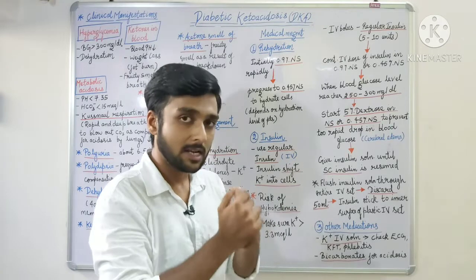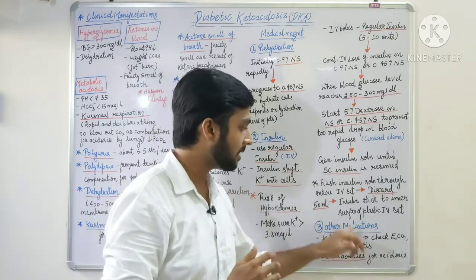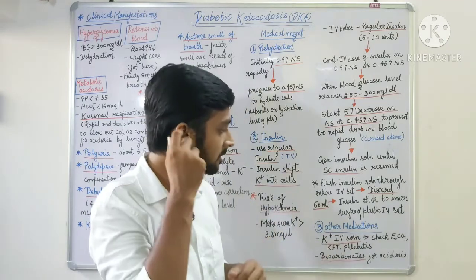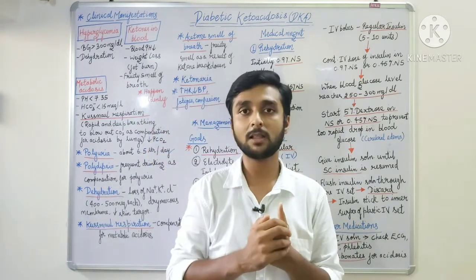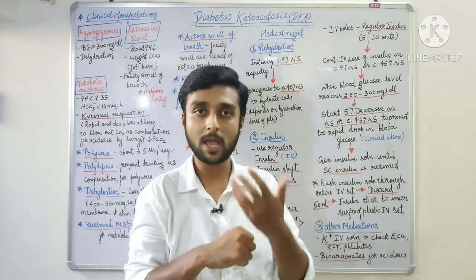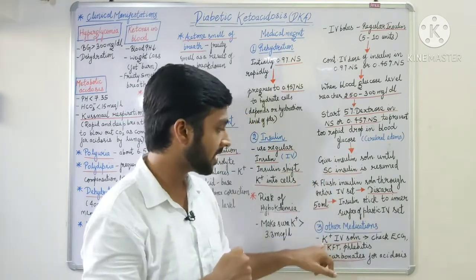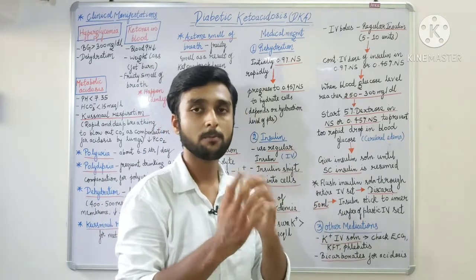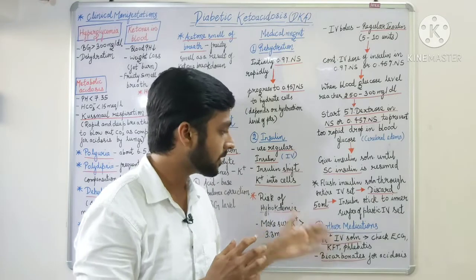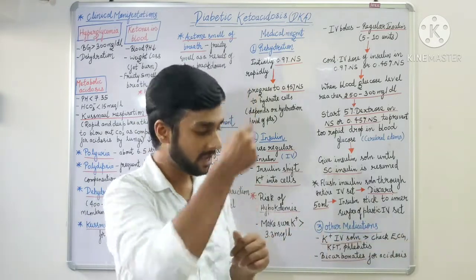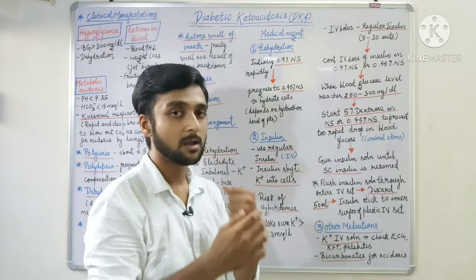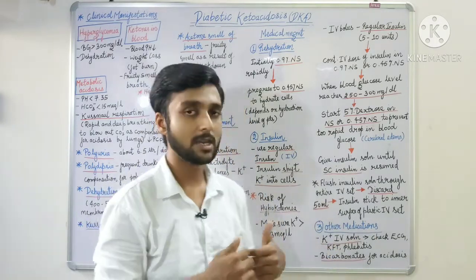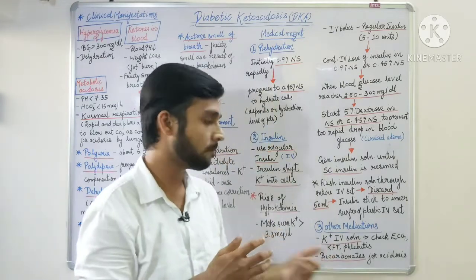For other medications, we have to give potassium IV solution because after insulin, potassium shifts into cells and there is a risk of hypokalemia. Potassium IV is given depending on the patient's blood potassium level. Note that potassium can also cause phlebitis. For persistent metabolic acidosis, we can administer bicarbonate depending on the patient's blood values.